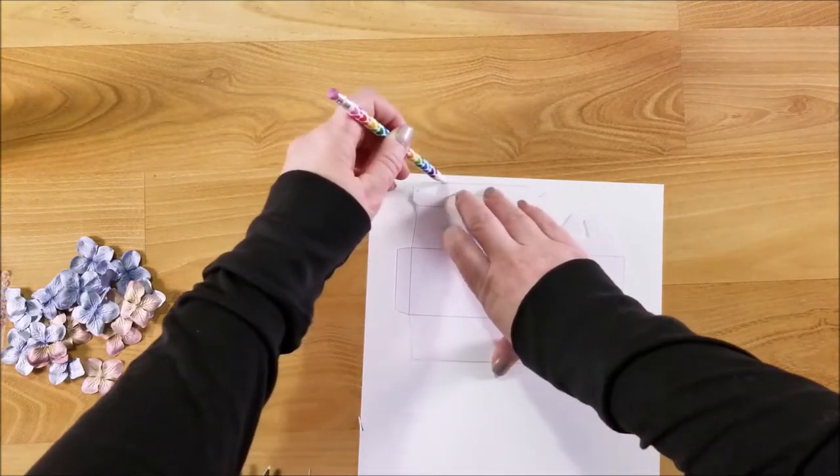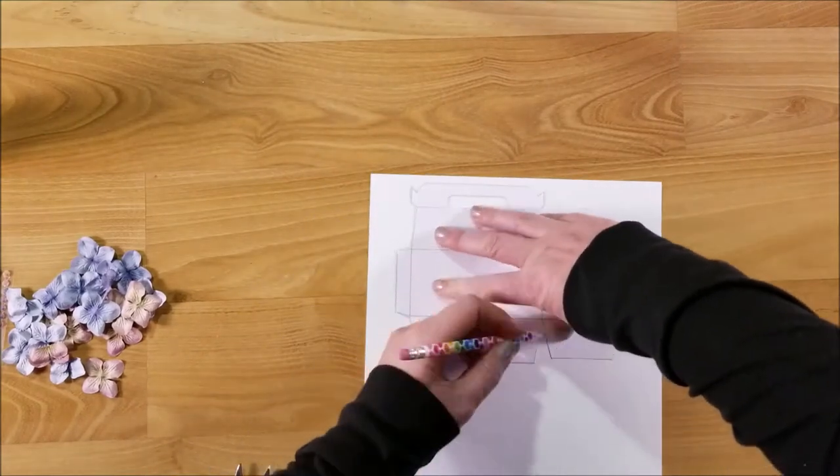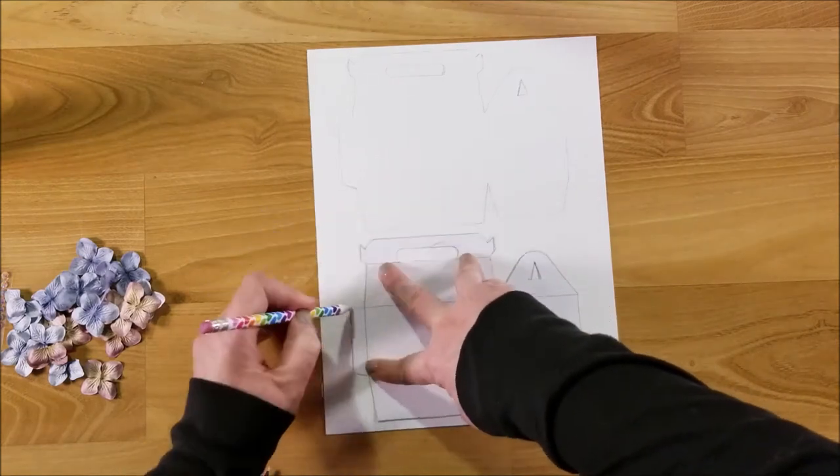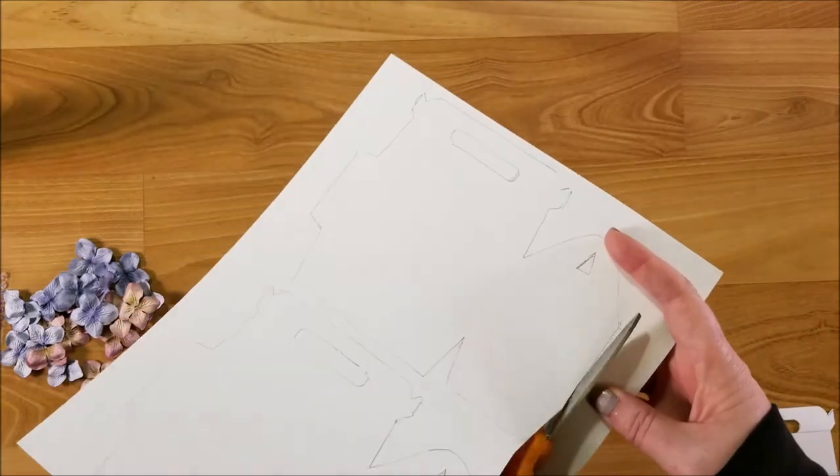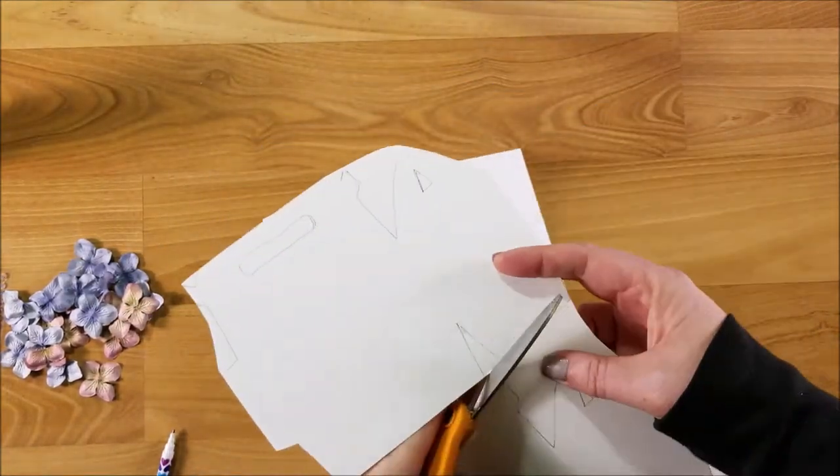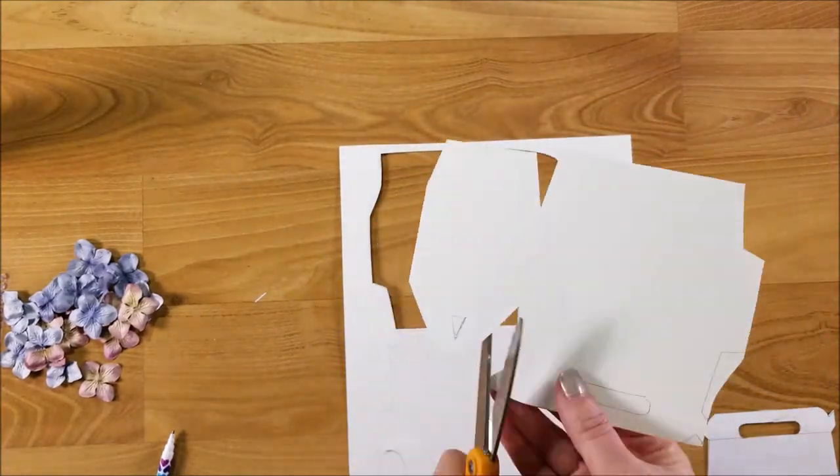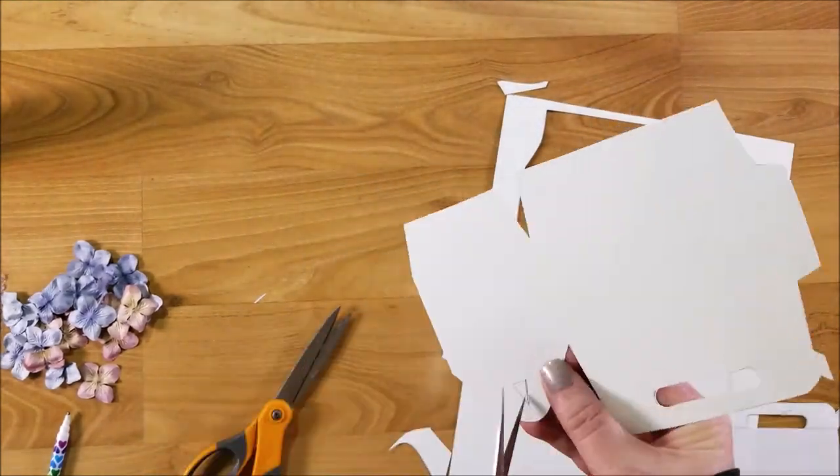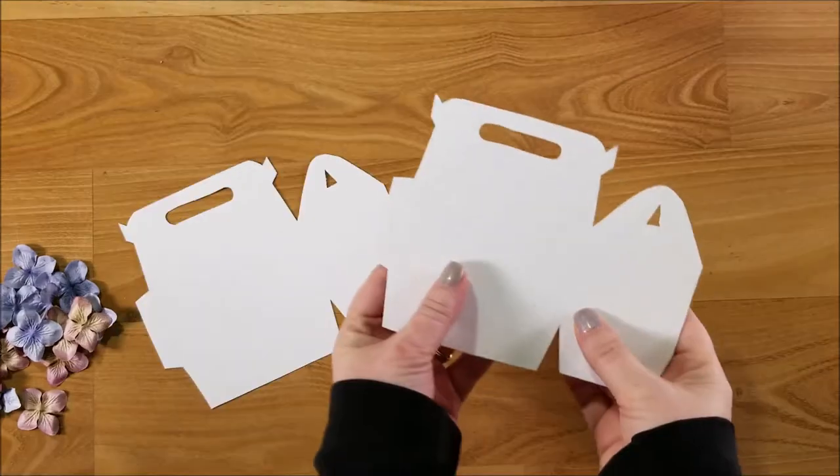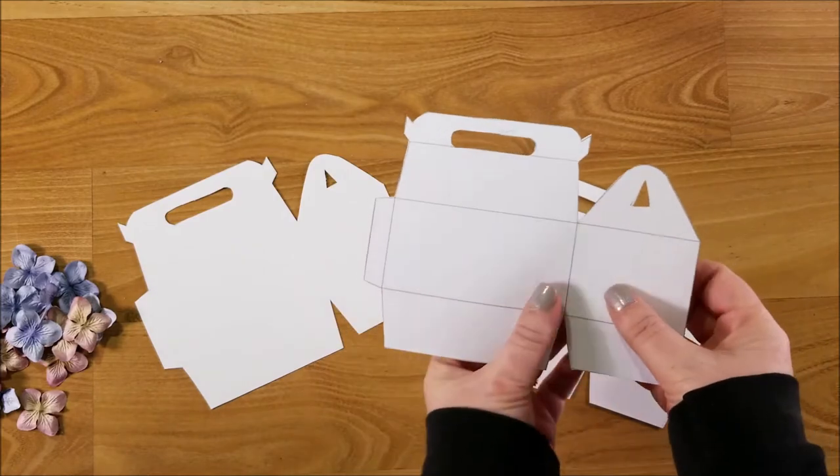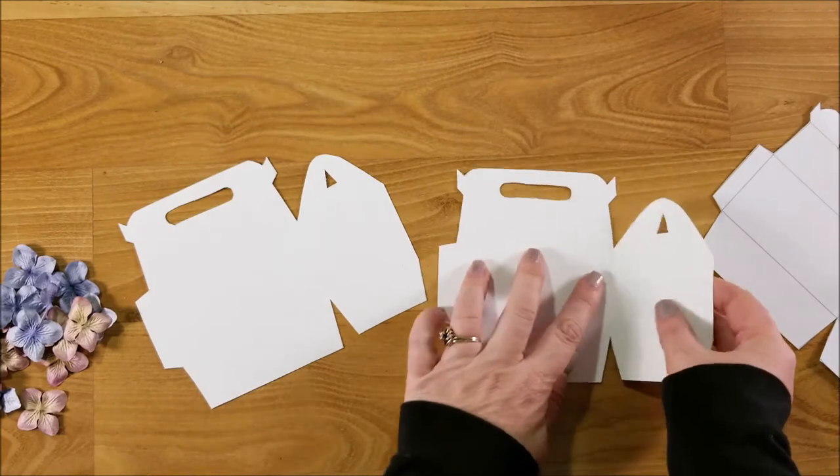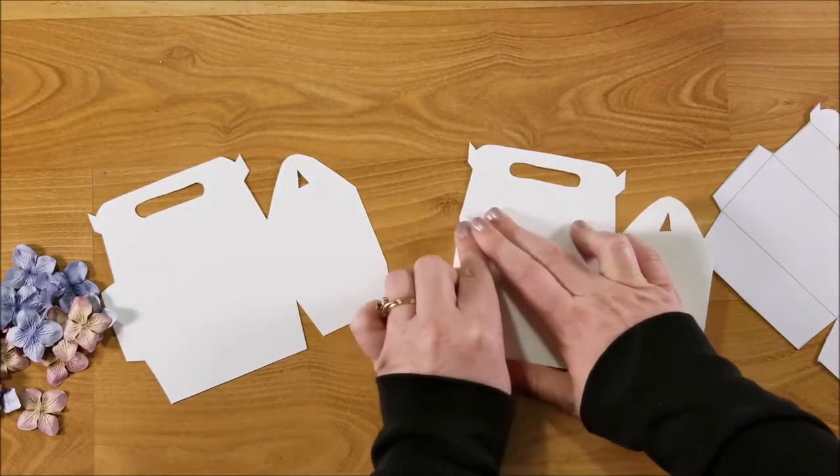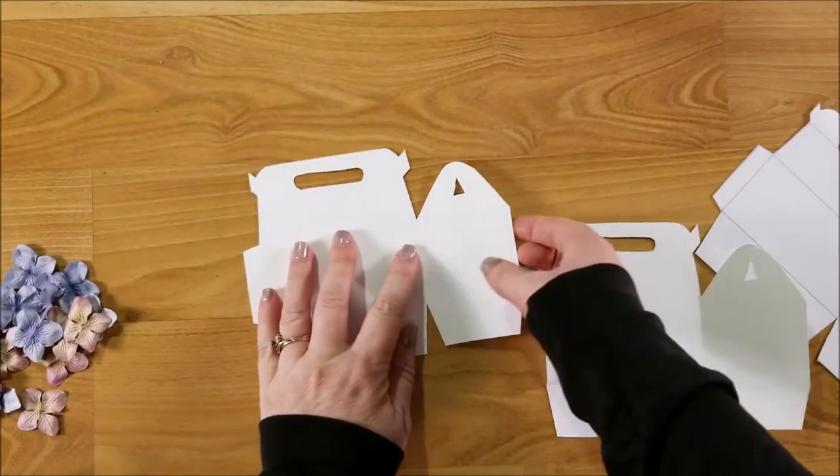So let's get this stuff cleared off and we will get started. First thing you're going to do is take your template and trace it twice onto the white cardstock and go ahead and cut both pieces out. The next thing you're going to do is fold on all of the solid lines. First we're going to fold these two lines here and fold the little flap.